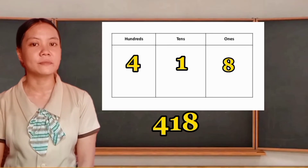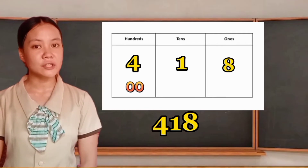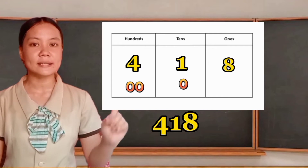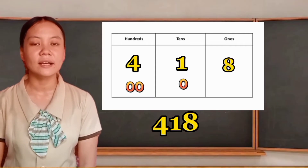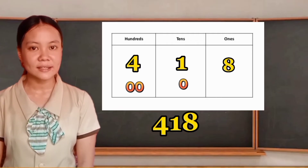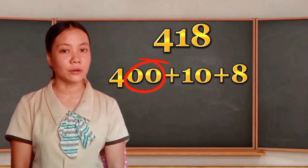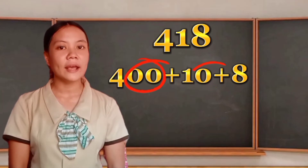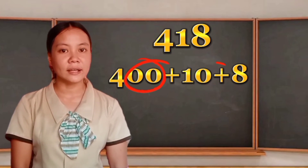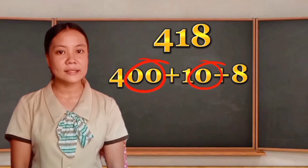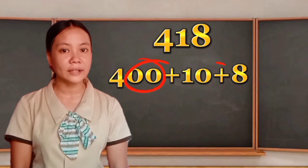All we need to do, class, as I said a while ago: in the hundreds place, we add two zeros; for the tens place, we add one zero; and for the ones place, we just write it by itself — we don't need to add a zero. So for hundreds we get 400, for tens we get 10, and ones stays as 8. So 418 in expanded form is 400 plus 10 plus 8. That will be the expanded form of 418.